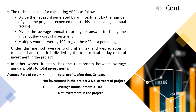The technique for calculating ARR is as follows: divide the net profit generated by an investment by the number of years the project is expected to last — this gives the average annual return. Then divide the average annual return by the initial outlay or cost of investment. Finally, multiply your answer by 100 to give the ARR as a percentage.